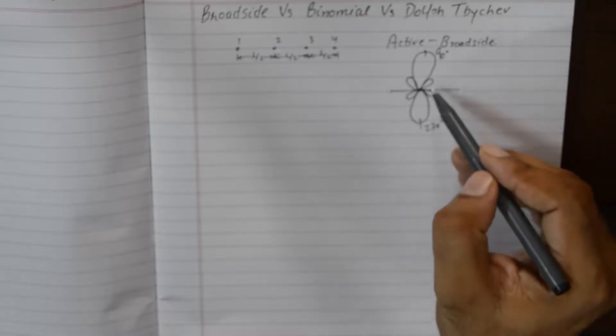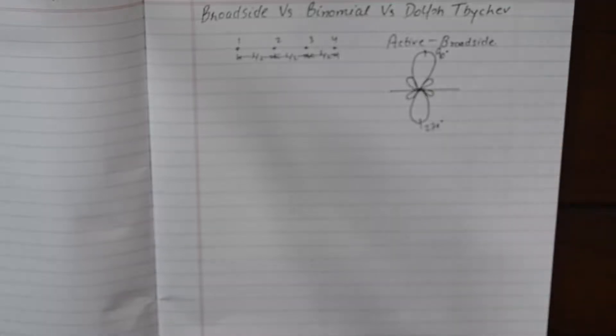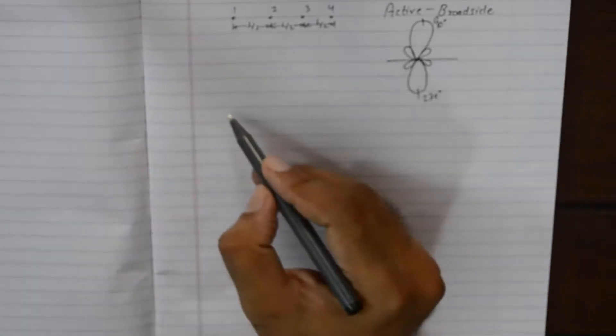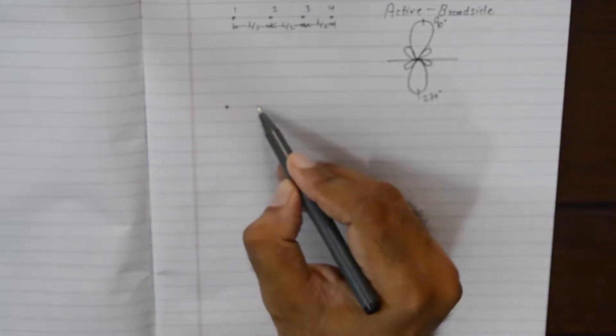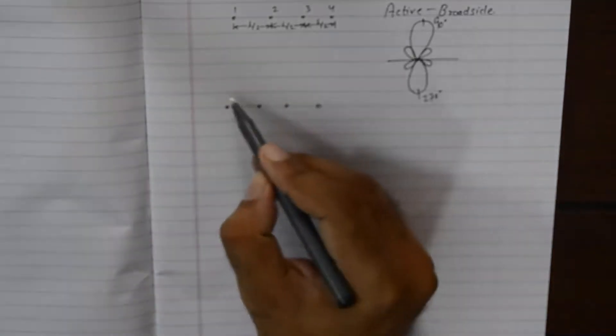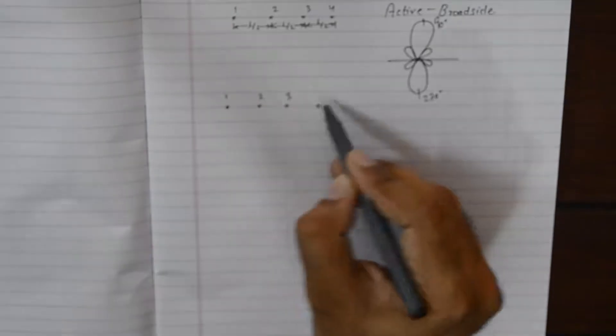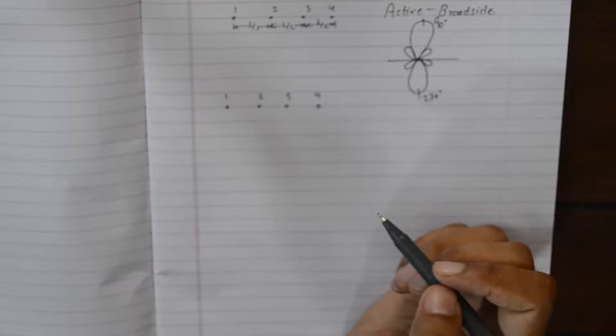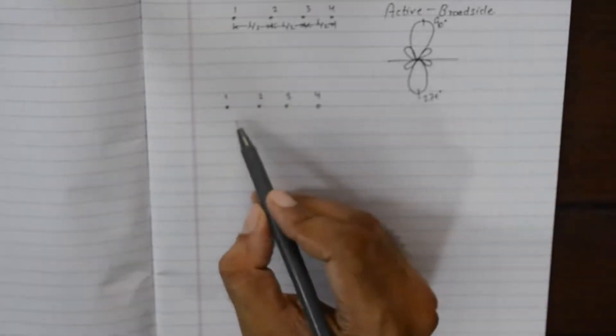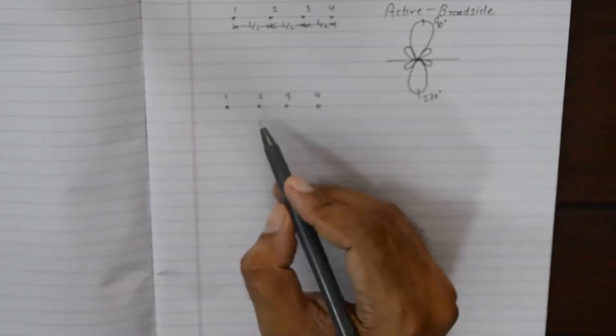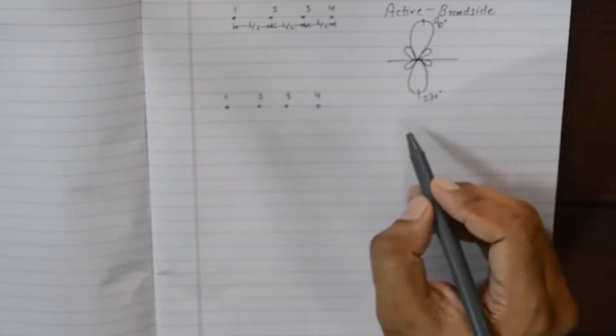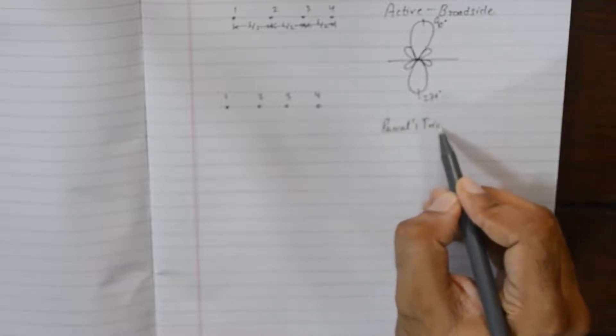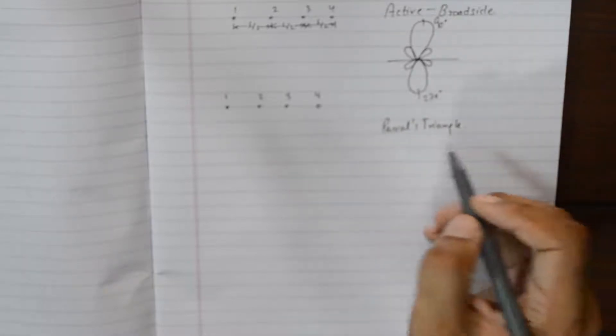In order to eliminate these side lobes, we make use of an array that has uniform spacing, but the energy distribution is not the same. For example, if you want to make a binomial array of four elements, we are going to use the Pascal's triangle to calculate the energy distribution.